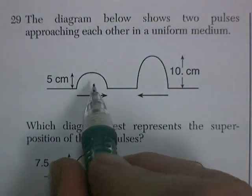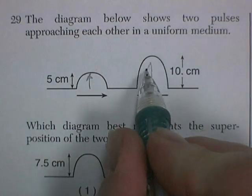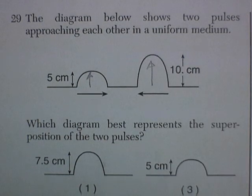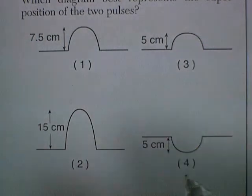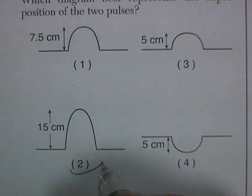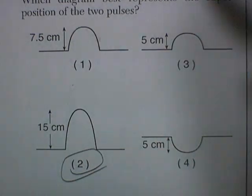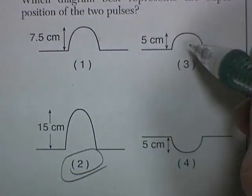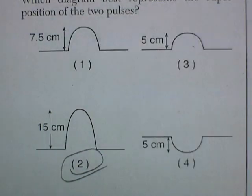When waves get together they add their amplitudes. So positive 5 plus positive 10 gives us a positive 15 — and this one's positive 15. If they were to subtract, if this was a negative 5, then we'd have negative 5 and positive 10. So we could have had that, but the other two don't happen.